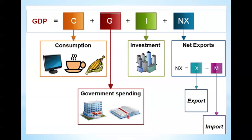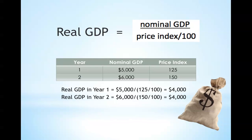In the income approach, one simply adds all sources of income. Real GDP is GDP adjusted for inflation, or changes in price levels in the economy over time. This provides a more accurate measure of economic performance, as it takes out the effects of price change in order to view changes solely in output. To calculate real GDP, one must know both the nominal GDP and the price index, or CPI. Real GDP equals the nominal GDP divided by the price index divided by 100.